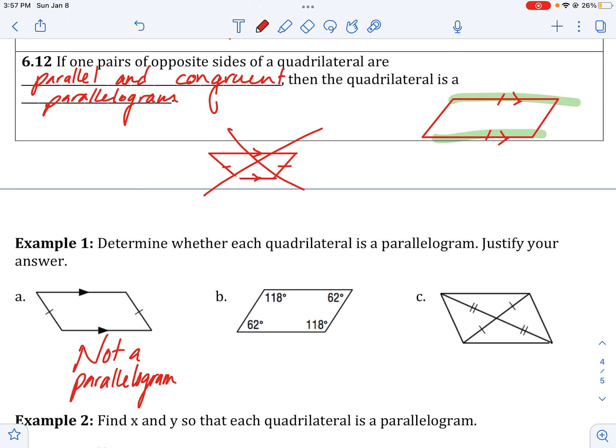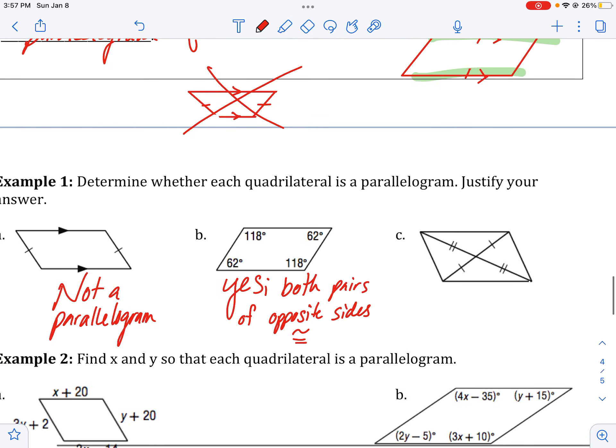On B, it is a parallelogram because I have both pairs of opposite sides are congruent. And the last one here, C, it is a parallelogram because the diagonals bisect each other.